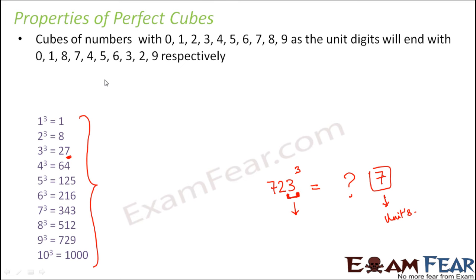So that is why we say that cubes of any number which ends with 0, 1, 2, 3, 4, 5, 6, 7, 8, 9, their cubes would end in these numbers because 10 cube is 1000. So any number ending with 0, its cube will also end with 0. Any number ending with 1, its cube will end with 1. Any number ending with 2, cube will end with 8. Any number ending with 3, cube will end with 7 and so on. So just by knowing the cubes of the first 10 numbers, you can actually predict the units digit of the cube of any number.